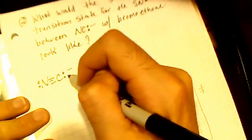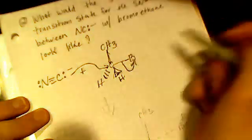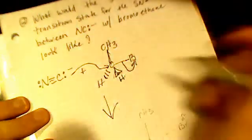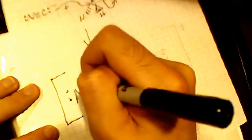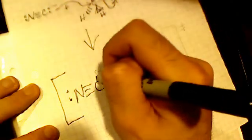The cyanide molecule is going to come and attack here, and then this bromine molecule is going to break off. But they want the transition state, they want to know what that would look like when it's transitioning. So here's the cyanide anion.